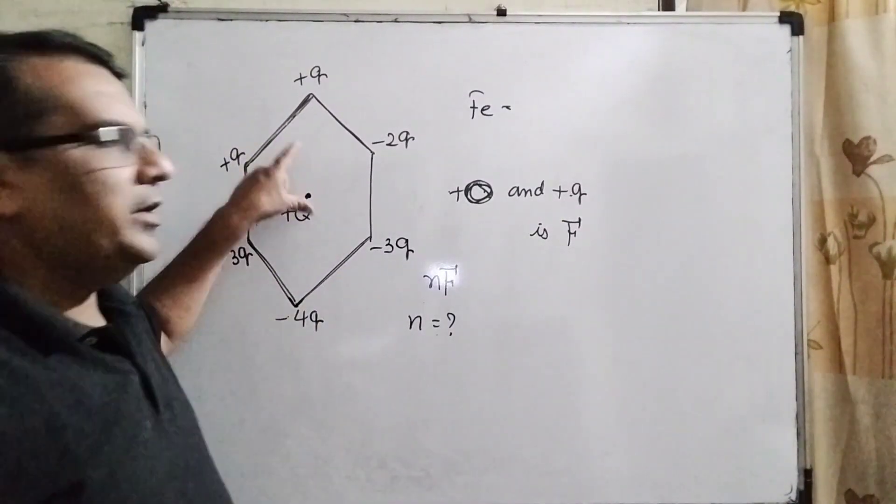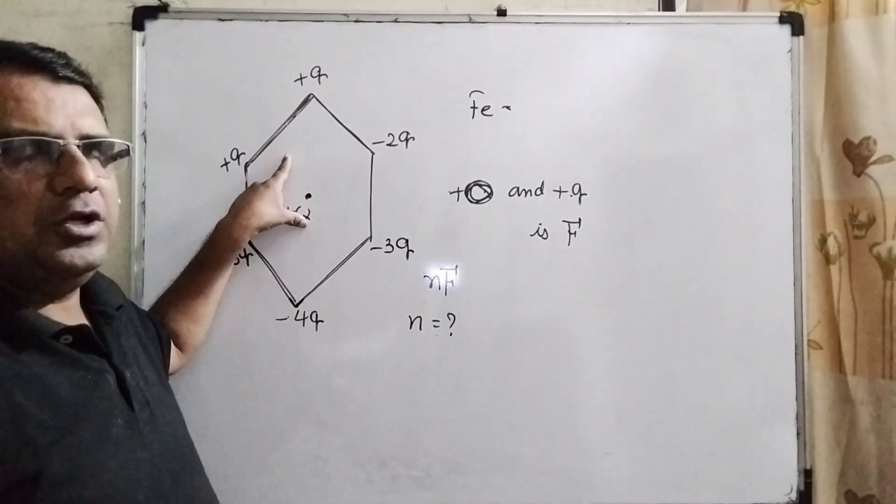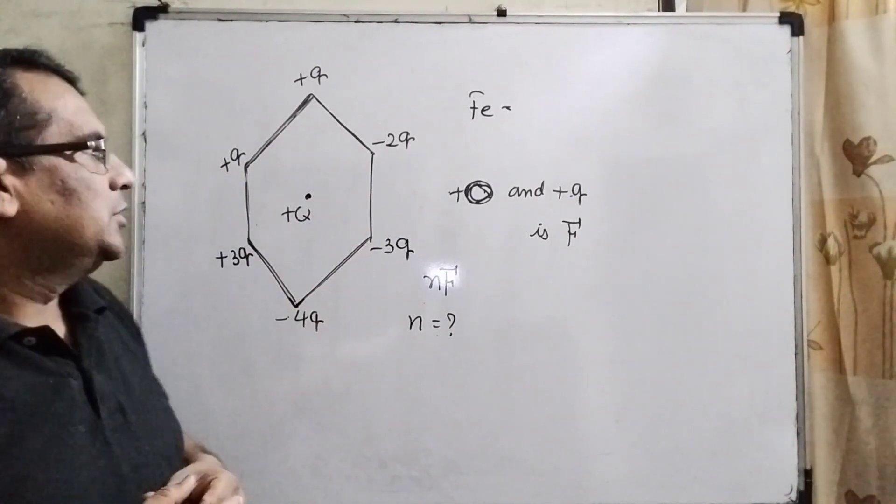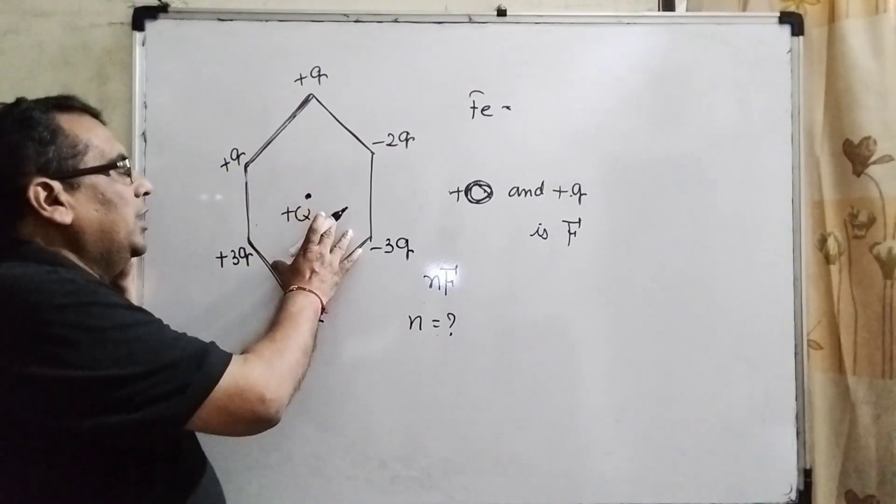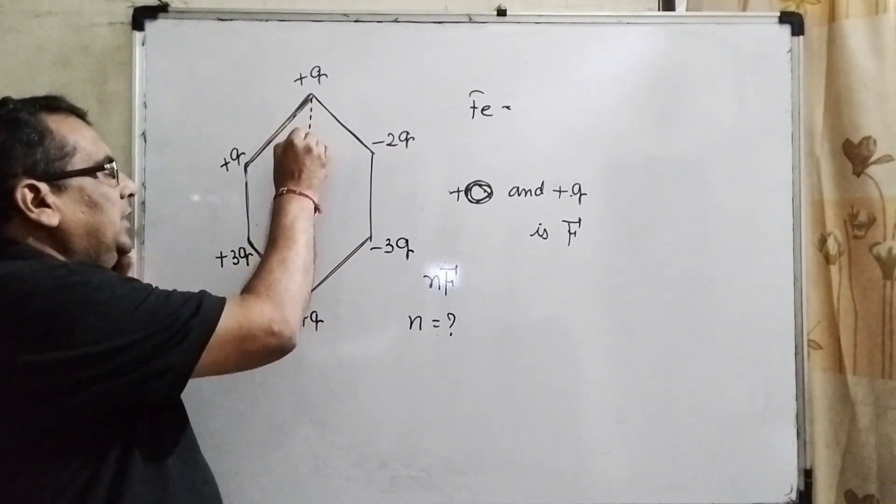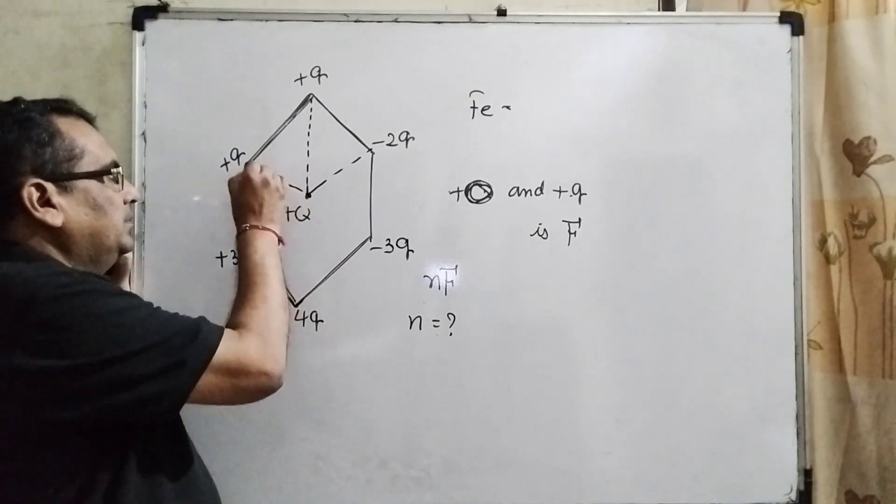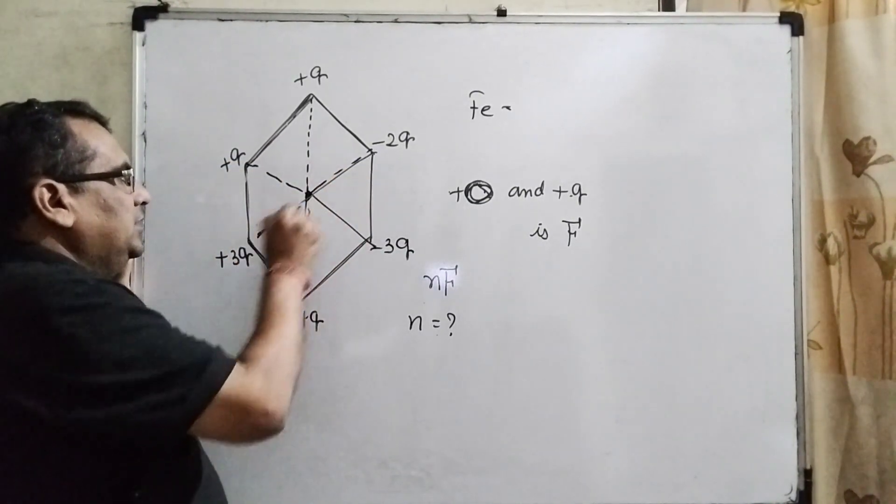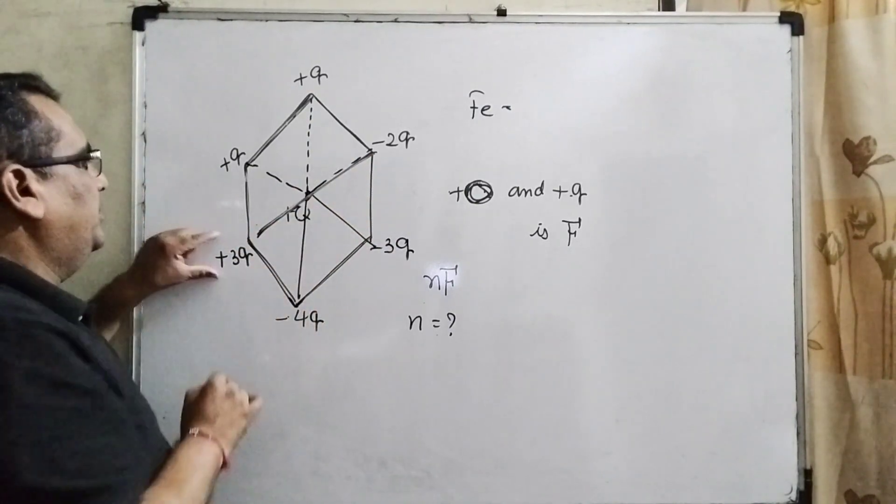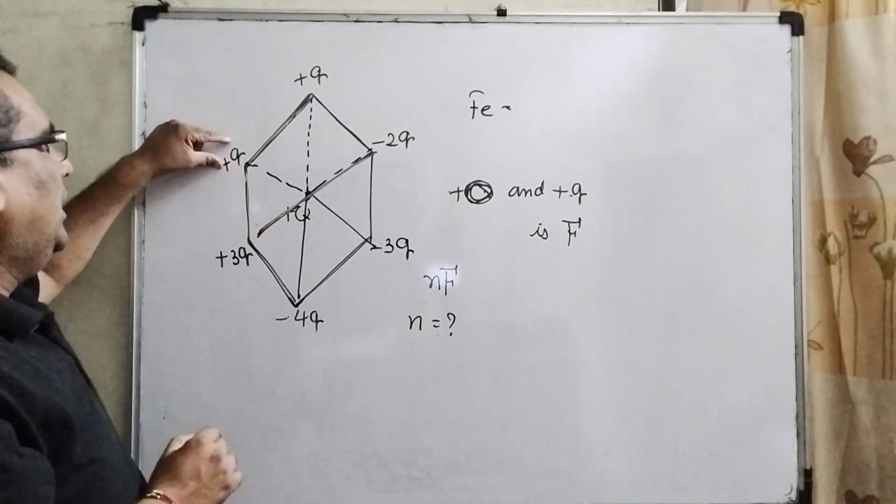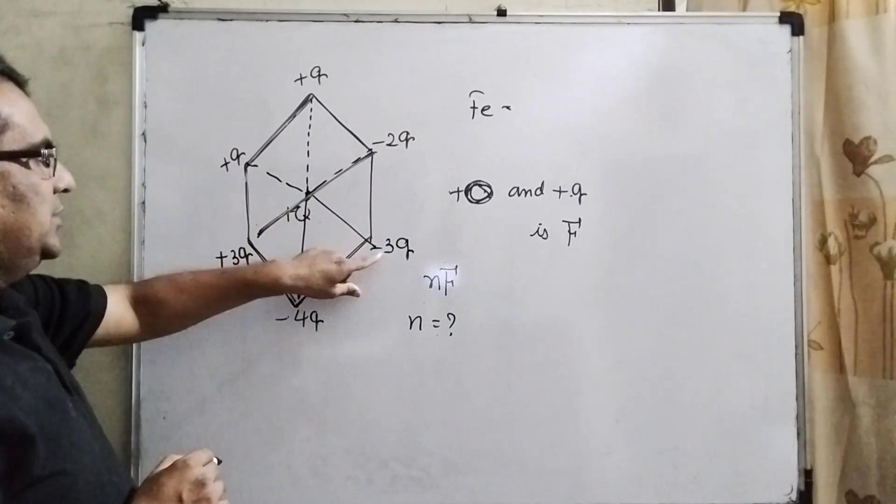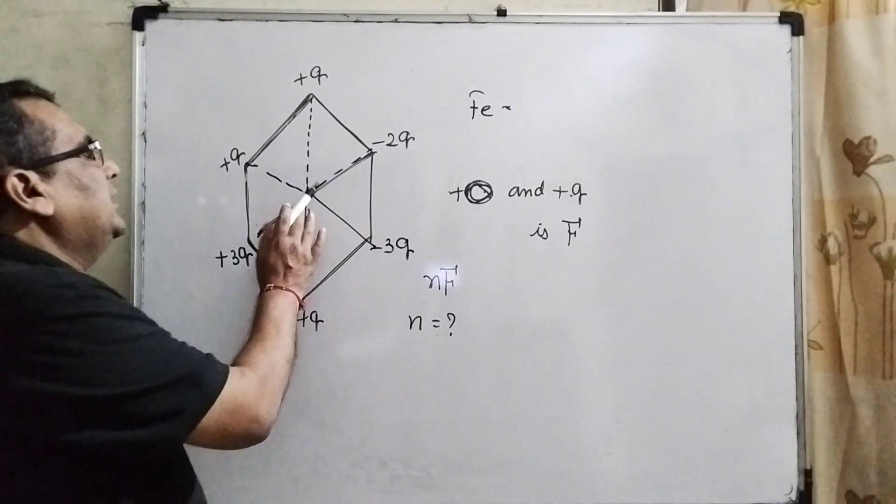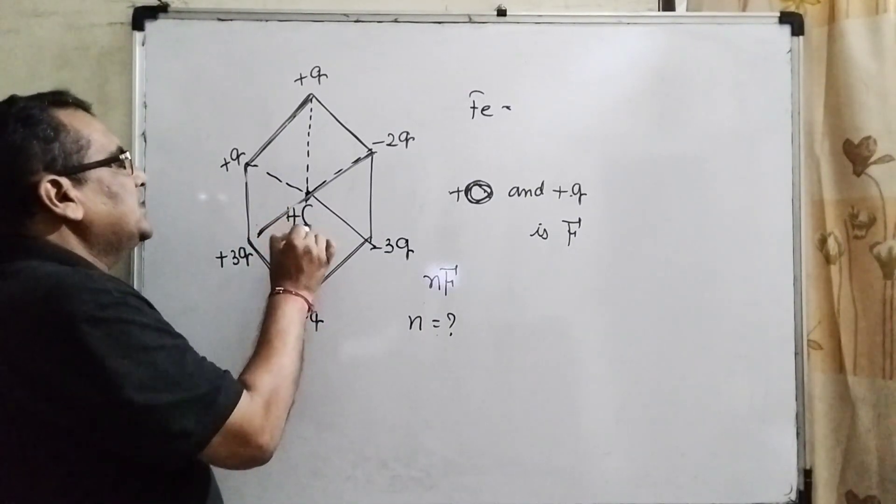Here the key point of this question is superposition of the electrostatic forces and then applying law of parallelogram. So, here you have given regular hexagon. It means all the sides from the centers are equal. This is in opposite direction plus 3q and minus 2q. And here q and minus 3q. Here plus q and here minus q. And at the exactly center that is plus capital Q charges.